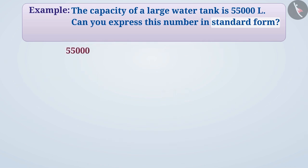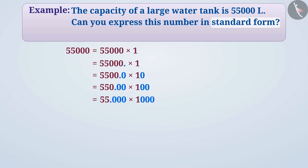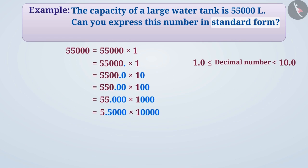Let's look at another interesting method to obtain the standard form. To express this number in standard form, we will write this number, then place a decimal point after it. Next, we shift the decimal point one step at a time towards the left. To keep the value of the number the same, we keep multiplying it by 10, shown by increasing the number of zeros to the right of 1. We continue doing this until the decimal number is equal to or more than 1.0 and less than 10.0.